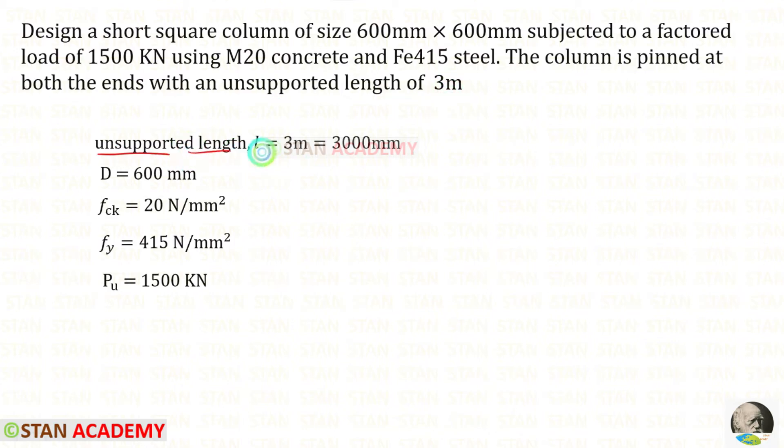The unsupported length L is given as 3 meters, which we can convert to 3000 millimeters. The size of the square is 600 mm by 600 mm. Let us keep one side as D. fck is given as 20 N/mm², fy is given as 415 N/mm², and the factored load Pu is given as 1500 kN.